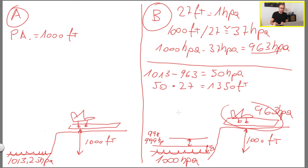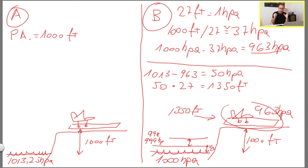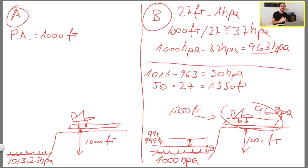So aircraft B behaves as if it were in a standard atmosphere but at 1350 feet, because that is the altitude the aircraft is actually feeling. We can say the pressure altitude is the altitude the aircraft is feeling, not the real altitude. So if you increase your pressure altitude, your performance will be worse — you'll need more runway or you can take off with a lower takeoff weight. That is the reason why you need to calculate the pressure altitude.